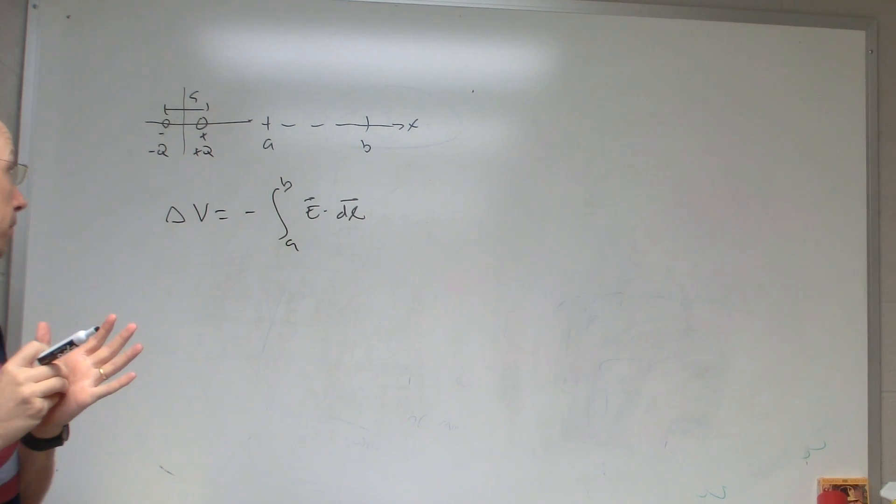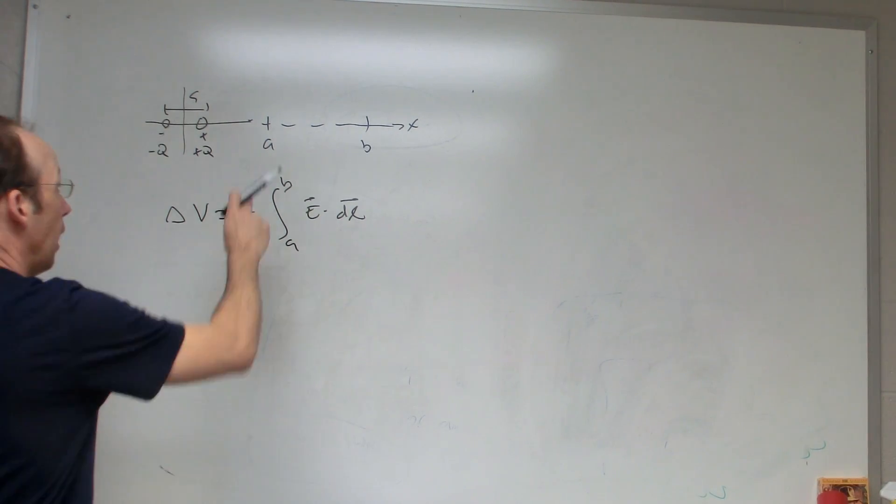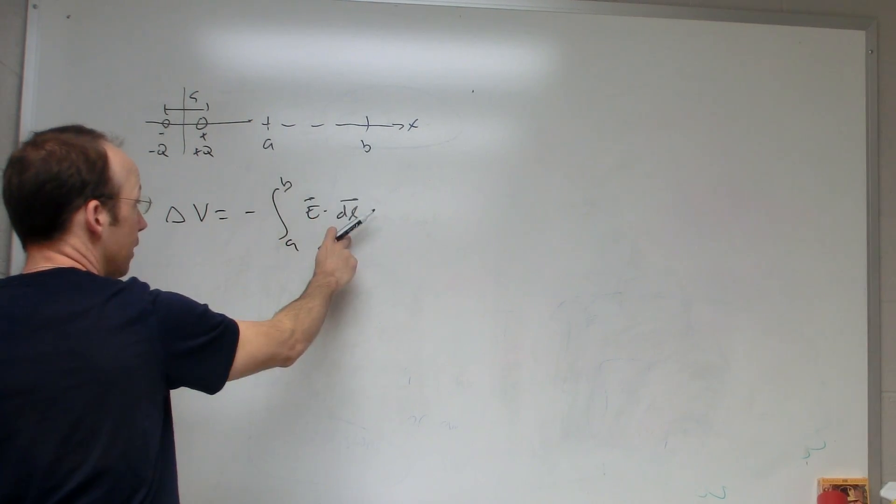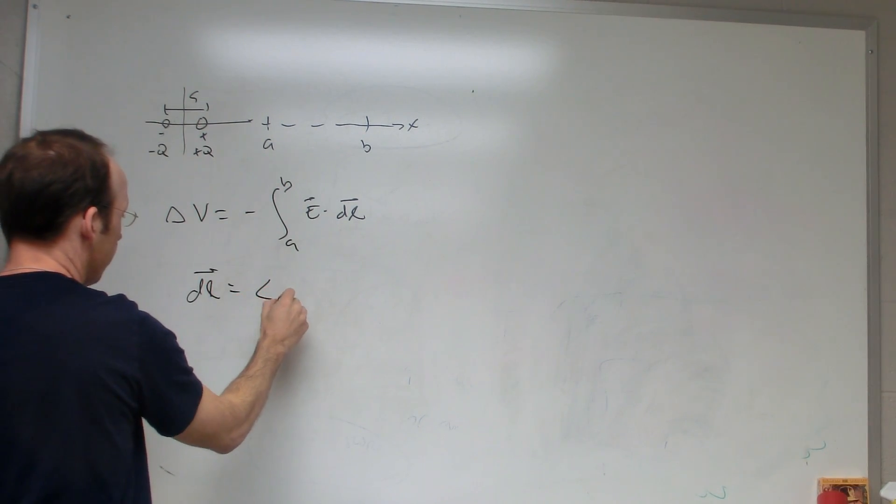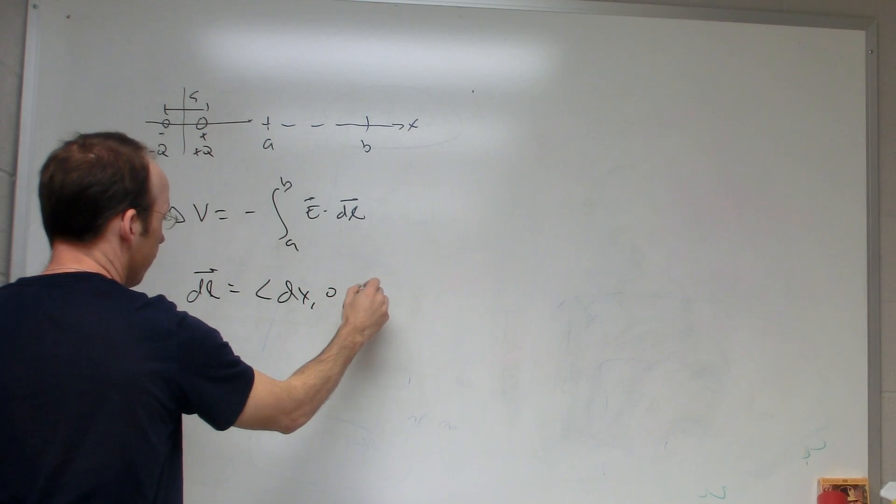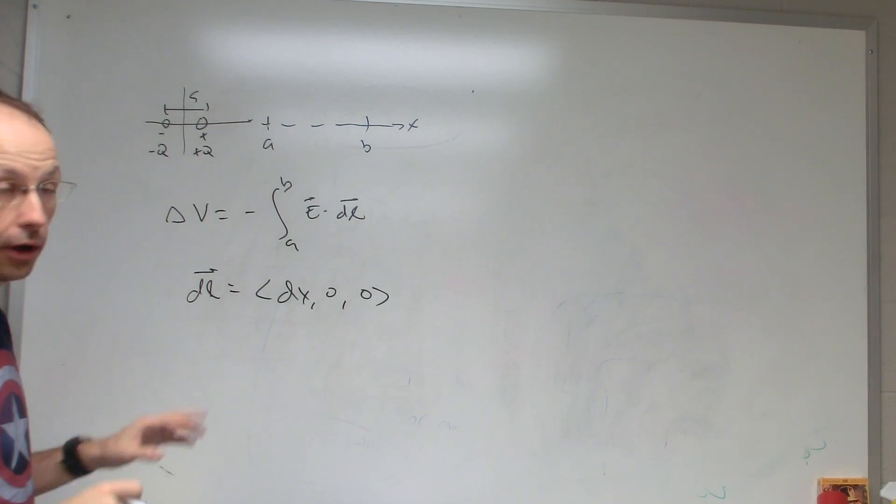Okay, now in this case, my dl is pretty easy. I'm going from here to there, so that's just in the x direction. So if I want to write it as a vector, I could write it as dx, 0, 0. I'm not moving at all in the y or z, so that's fine.